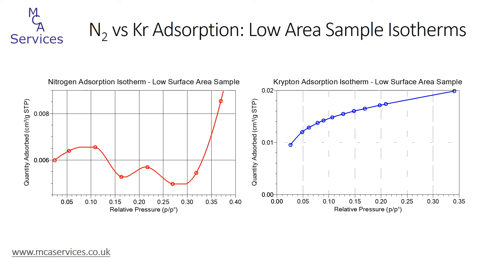For krypton analysis, just like nitrogen, we use liquid nitrogen as the cryogen, and that's the standard technique for both adsorbates. However, 77 kelvin is below the triple point of krypton, so at some point it would solidify in the analysis tube. This is a visual effect called the krypton snowstorm, which occurs at approximately 0.5 relative pressure, so it's sensible to collect isotherms below this. Since the relative pressure range we can analyze encompasses the BET range, krypton remains a valuable tool for low area BET surface area analysis.